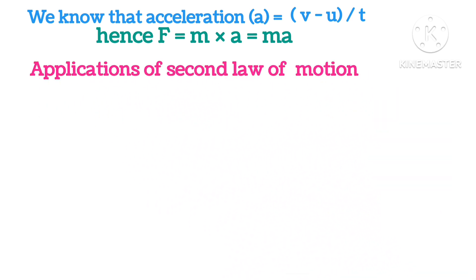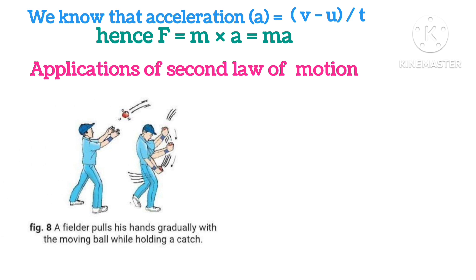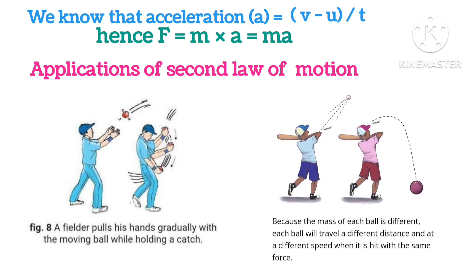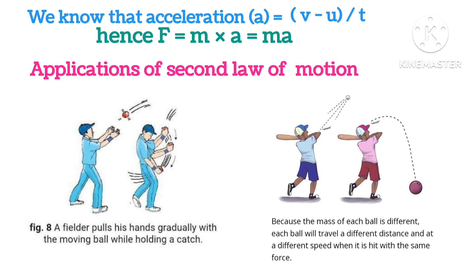Application of the second law of motion. A fielder pulls his hand gradually with the moving ball while holding a catch. Similarly, because the mass of each ball in the second picture is different, each ball will travel a different distance and at different speed when hit by the same force.